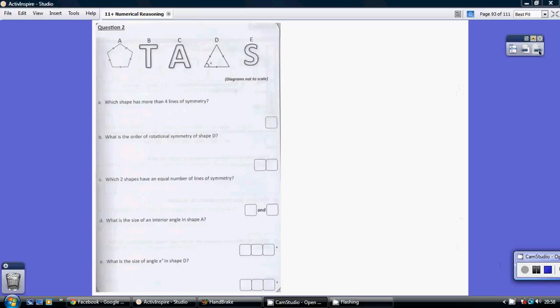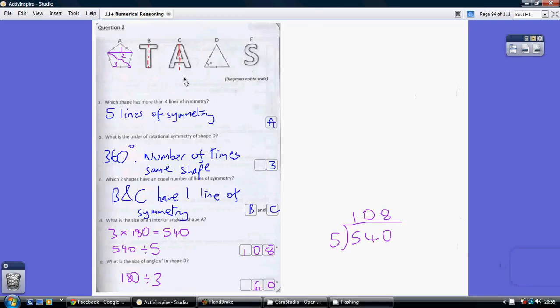Question 9.2. So which shape has more than four lines of symmetry? Well that is going to be shape A because that's got five lines of symmetry.